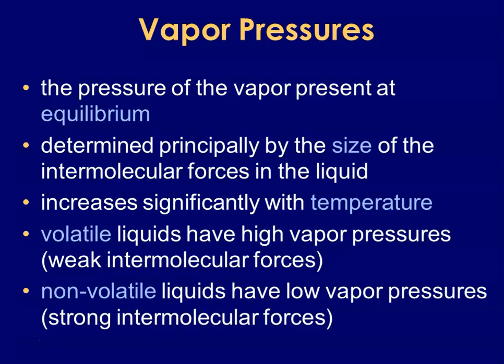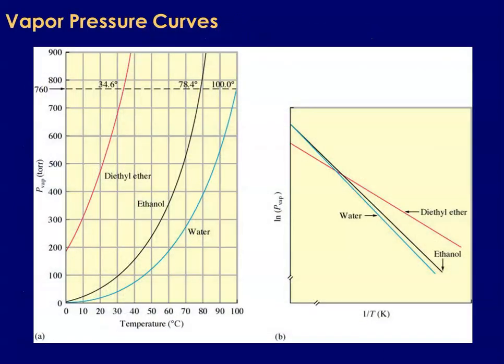Non-volatile liquids are not as readily able to escape the liquid surface because they must overcome stronger intermolecular forces, resulting in much lower vapor pressures. Looking at this curve — a red line, a black line, and a blue line — those are vapor pressures for diethyl ether, ethanol, and water. At a given temperature, water has the lowest vapor pressure and diethyl ether has the greatest, meaning diethyl ether has the weakest intermolecular forces to overcome.